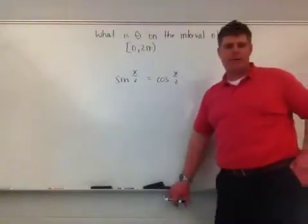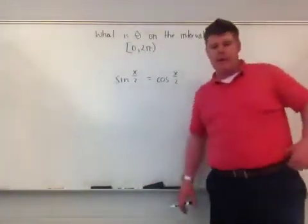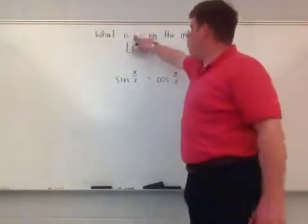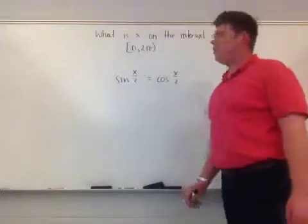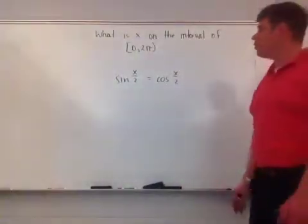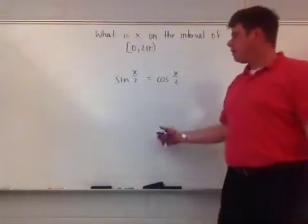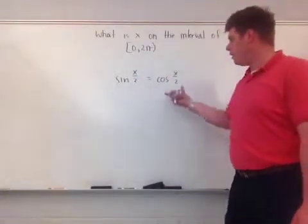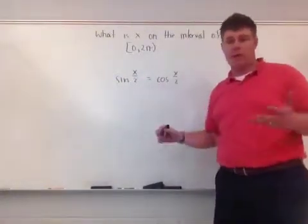Okay, here, so now what I've got is what angles am I cutting in half? For this particular problem, I want to know what is x, so x is just my theta on some interval of 0 to 2π, that would give me the function sine of x/2, the half angle of sine, and the half angle of cosine being equivalent.